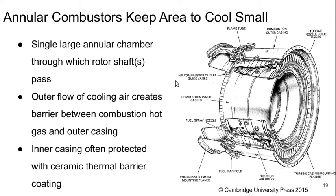Annular combustors keep the area to cool very small. You basically have a single large annular combustion chamber through which the rotor shafts pass in the middle. An outer flow of cooling air also creates a barrier between the combustion hot gases and the outer casing. The inner casing is often protected with a ceramic called a thermal barrier coating, which is essentially sprayed onto the surface and then hardens.